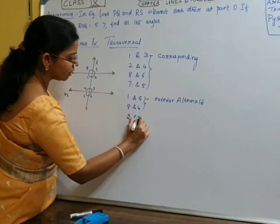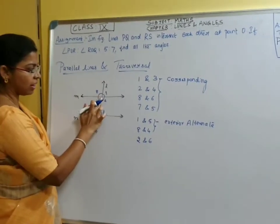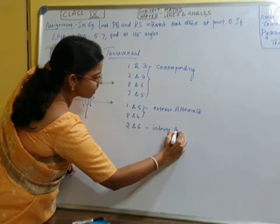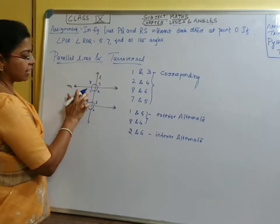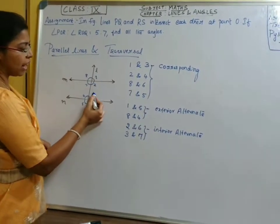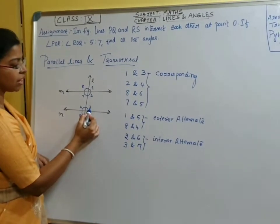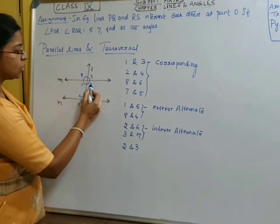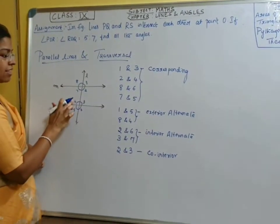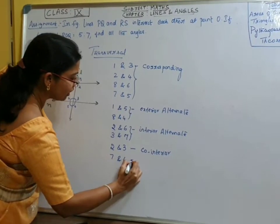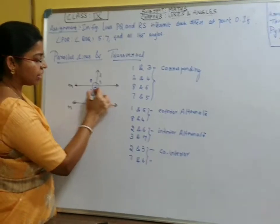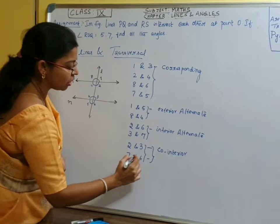Two and six are inside the parallel lines and on either side of the transversal — therefore they are interior alternate angles. The other pair is three and seven. These two pairs are interior alternate angles. What about two and three? They are interior as well as on the same side of the transversal, so two and three are co-interior angles. Similarly seven and six. These angles are inside the parallel lines, so they can only be co-interior. Both these pairs are called co-interior angles.